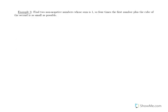First example: find two non-negative numbers whose sum is one, so that four times the first number plus the cube of the second is as small as possible. Step 1: draw a picture and assign variables. There's not really a picture to draw here, but we have two unknowns — the first number, which we'll call x, and the second number, which we'll call y. We're trying to find what these two numbers are so that the given expression is minimized.